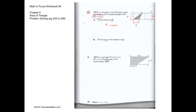To find the area of the shaded triangle, DF is the base and the height is AD, which is 4. The area of the triangle is half base times height: half of 4 times 4, giving an answer of 8 inches squared.